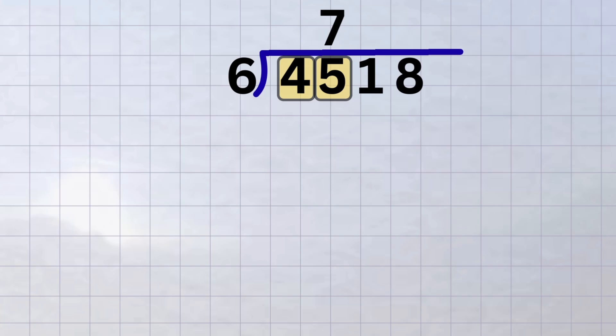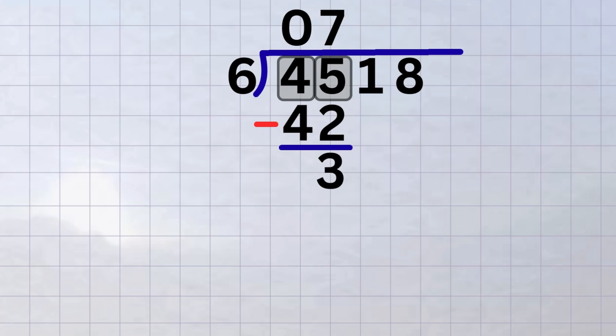Because we skipped the first digit and combined it with the next, we could, if we want, put a zero above that first digit so we don't get confused. Now, write forty-two under forty-five and subtract, giving us three. Bring down the next digit in the dividend, the one, and place it beside the three to make thirty-one.